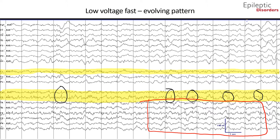Throughout the course of this page, the low-voltage fast activity and embedded sharp waves in the right frontal chains evolve to polymorphic sharply contoured activity that becomes rhythmic, especially in the F8, F4, T4, and T6 regions outlined by the red square. Also noted is regional hemispheric involvement of the C4 and P4 regions with polymorphic quasi-rhythmic delta activity that appears sharply contoured with embedded spikes outlined by the green arrows.